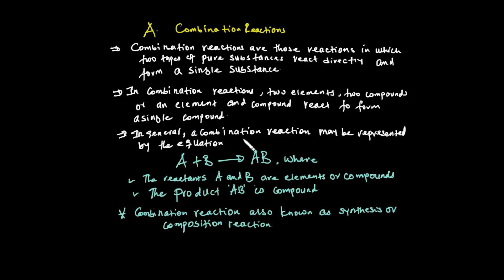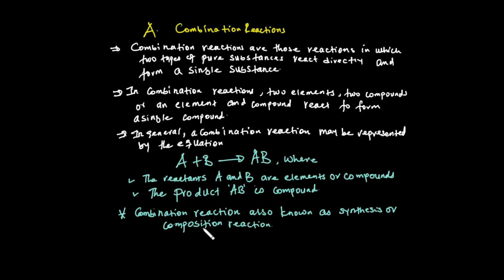In general, combination reactions may be represented by the equation: A + B → AB, where the product AB is a compound, and the reactants A and B are elements, compounds, or an element with a compound. Combination reaction is also known as synthesis.